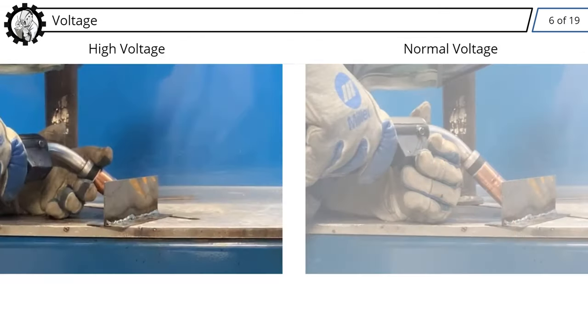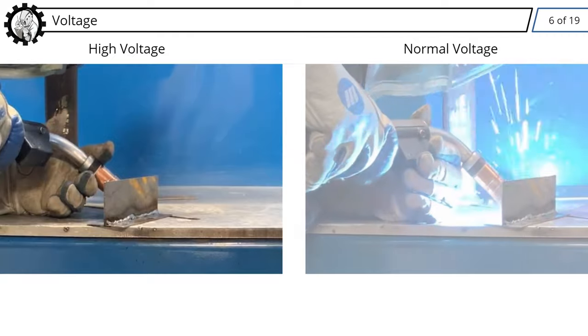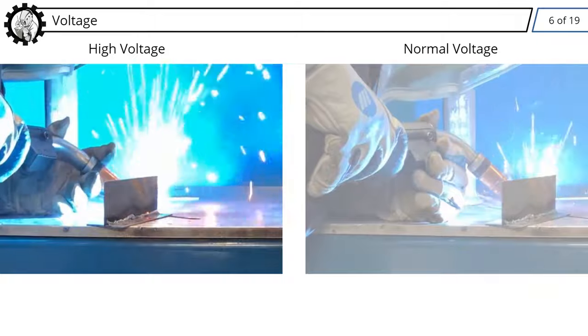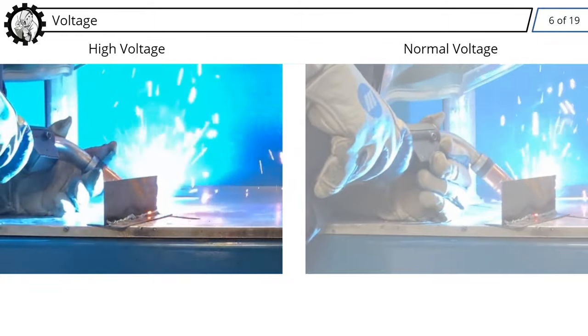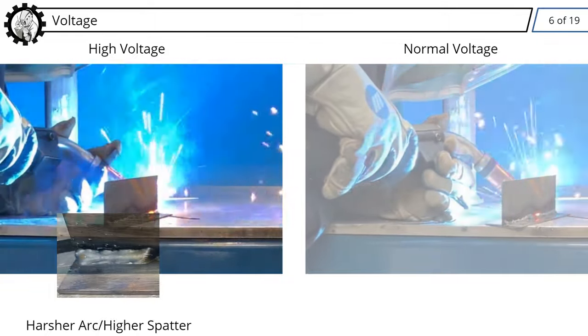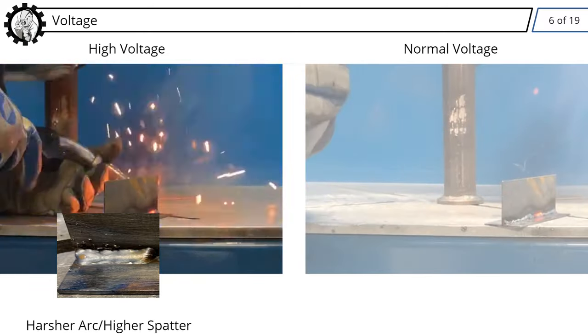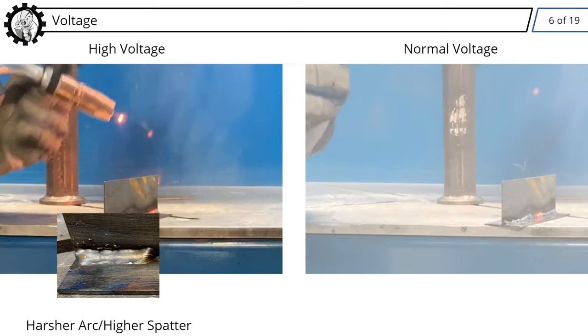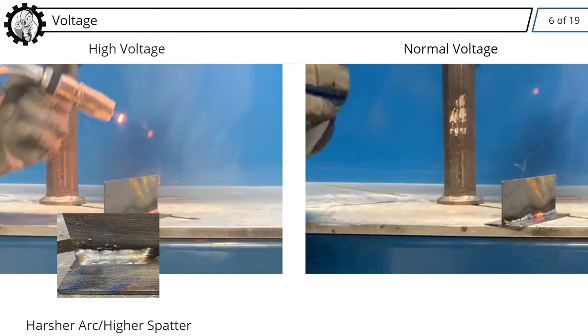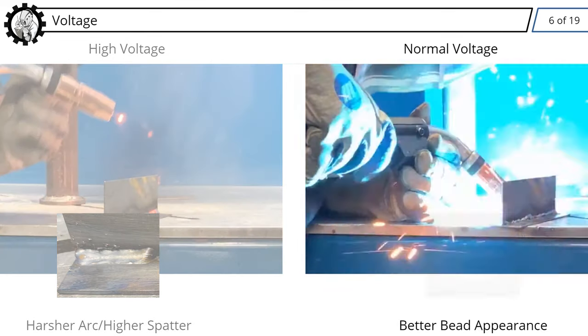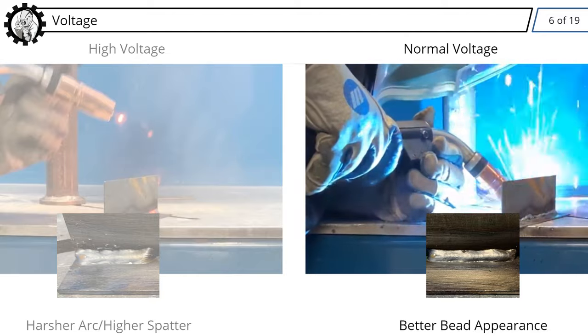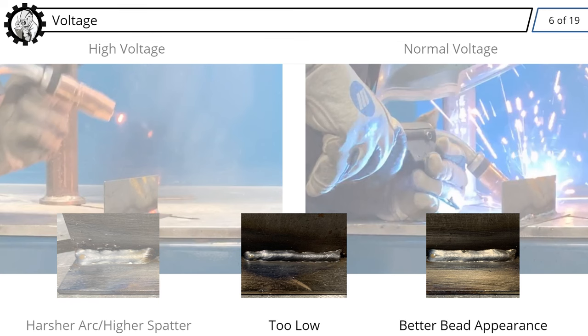The effects of voltage can be observed in the welding process. In this example, you will see two welds being performed. With all other variables the same, a disproportionately higher voltage produces a harsher arc, with higher amounts of spatter. With a lower voltage, the bead appearance becomes more attractive. But as voltage is lowered out of proportional range, the bead becomes tall and ropey, lacking good fusion with the base metal.